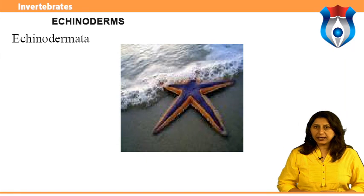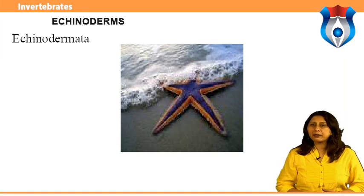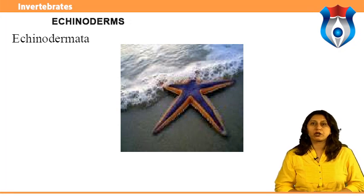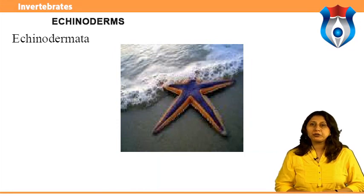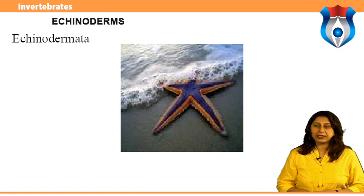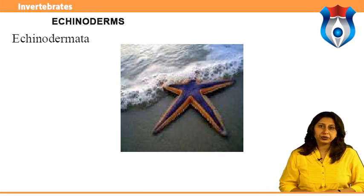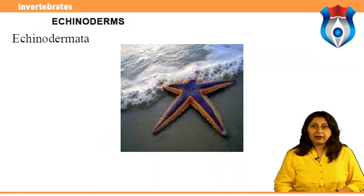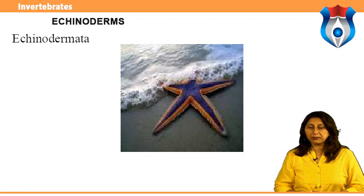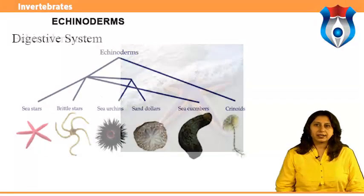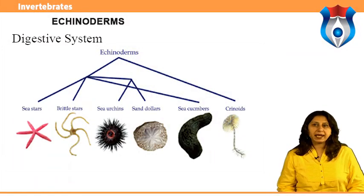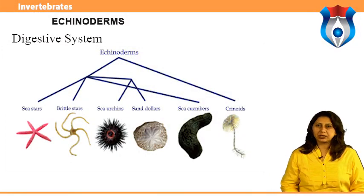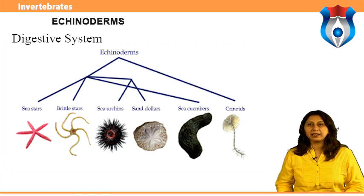Echinoderms, scientific name Echinodermata, are a major group of exclusively marine animals. The name comes from the Greek for 'spiny skin.' There are about 7,000 species found on the seafloor, in every marine habitat from the intertidal zone to ocean depths. They have a wide variety of colors, and at least 800 species are found on the Great Barrier Reef. Echinoderms have a simple digestive system with a mouth, stomach, intestine, and anus; in many, the mouth is on the underside and the anus on the top surface.